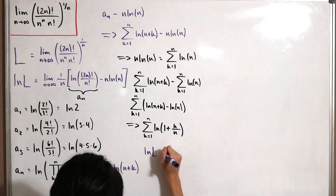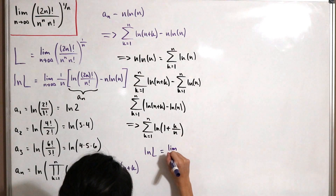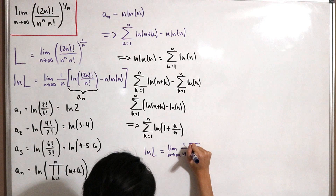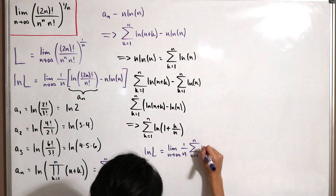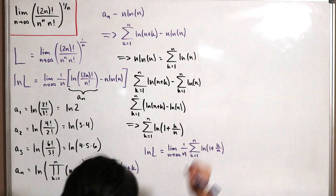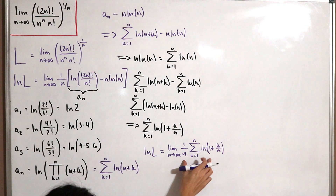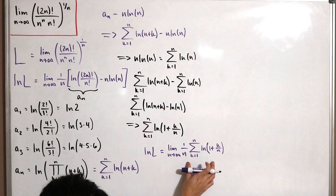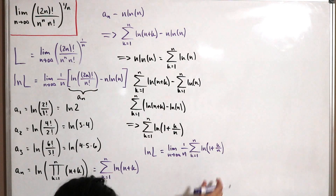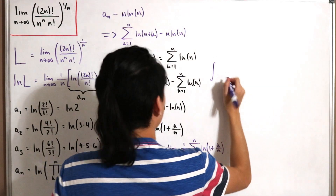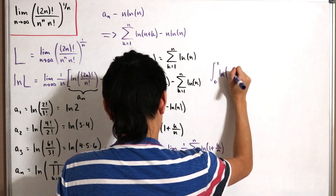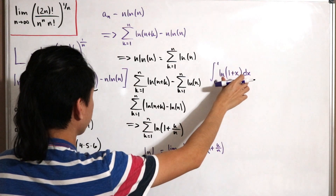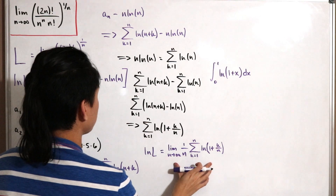Putting everything together, ln(L) equals the limit as n approaches infinity of (1/n) times the sum from k=1 to n of ln(1 + k/n). This is precisely the definition of a Riemann sum, and it equals the definite integral from 0 to 1 of ln(1+x) dx.